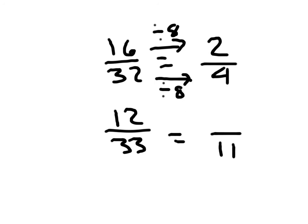12 thirty-thirds equals how many elevenths? 33 to 11, looks like you divide by 3. Doing that same thing in the numerator, 12 divided by 3 is 4, so 12 thirty-thirds equals 4 elevenths. We say that 12 thirty-thirds and 4 elevenths are equivalent fractions.